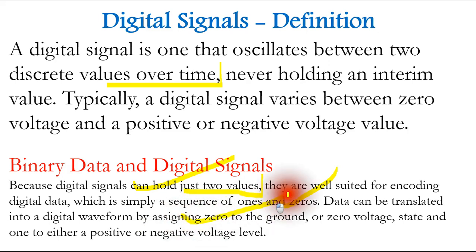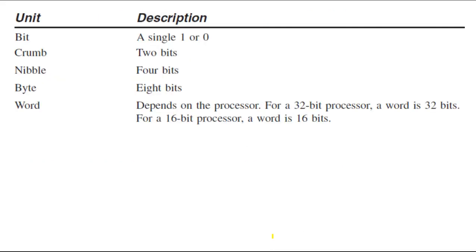Now there are a couple of units to be used for this. The first one is bit - a signal one or zero. We describe it as one or zero. And crumb is two bits.